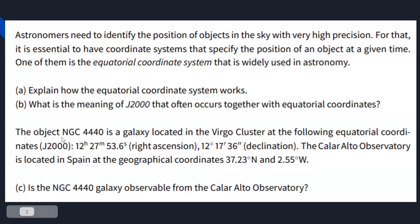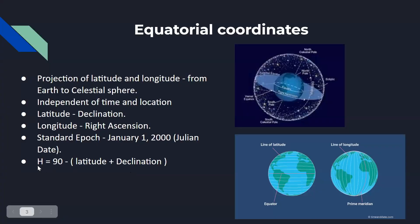And the next one is the object NGC 4440 is a galaxy located in Virgo cluster at the following equatorial coordinates. So they have given the right ascension and declination. And they are asking the Calar Alto observatory is located in Spain at the geographical coordinates of, and by here they are given the latitude and longitude. And now they are asking whether this galaxy is observable from the Calar Alto observatory.